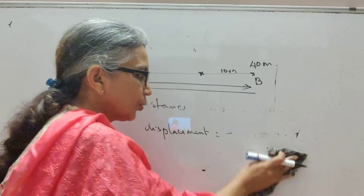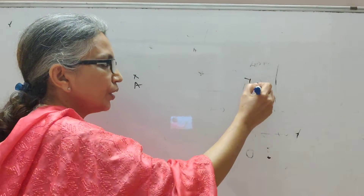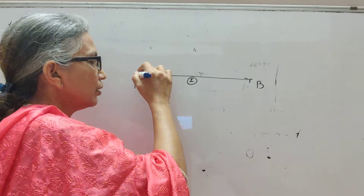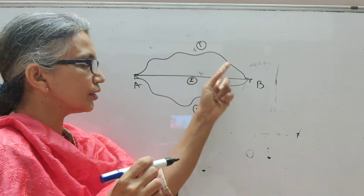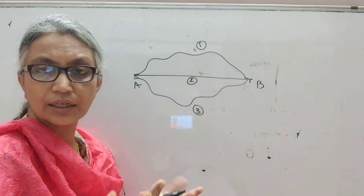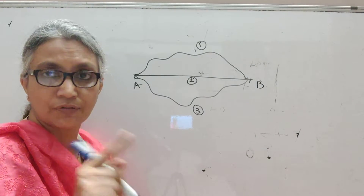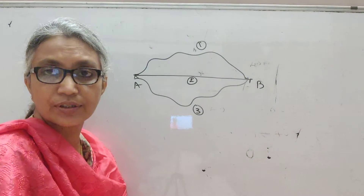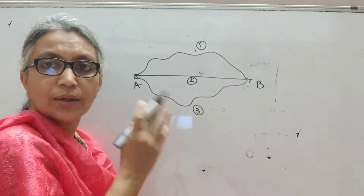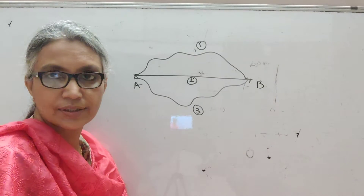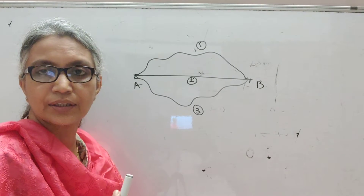Another difference between distance and displacement: if we have three students going from A to B by different paths, each will cover a different distance — those values can be anything. But displacement can have only one unique value, which is the shortest distance between the initial and the final position. So these are some of the differences between distance, which is a scalar, and displacement, which is a vector.